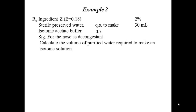Let's look at another example to reinforce these concepts, and then we'll look at situations with multiple components. Here you are required to calculate the total volume of purified water to make the solution isotonic. The drug is Ingredient Z with an E value of 0.18, at 2% weight by volume, and the total volume is 30 milliliters.